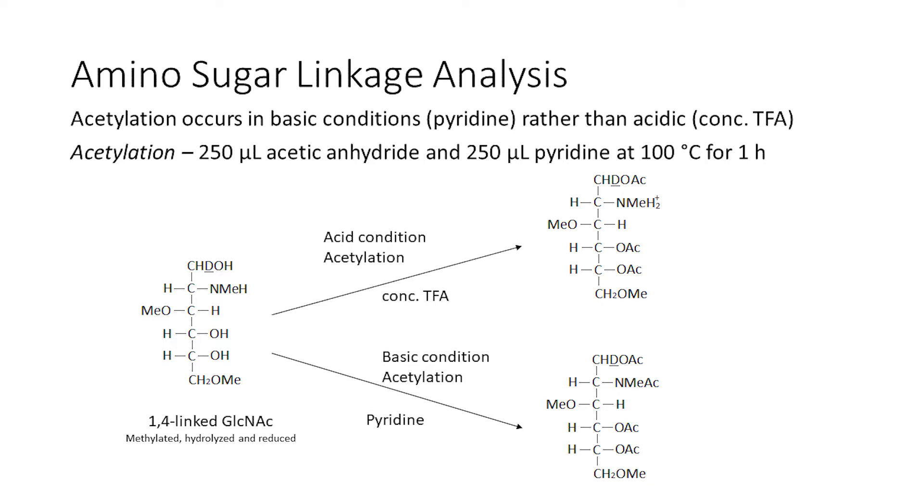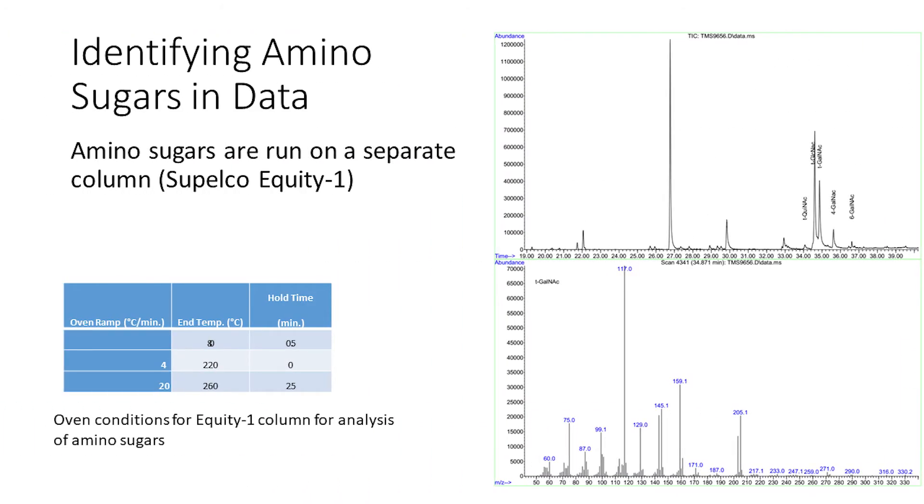For the basic condition acetylation, 250 microliters of acetic anhydride and 250 microliters of pyridine is used. The hydroxyl groups are less efficiently acetylated so the samples are heated at a higher temperature at 100 degrees Celsius and left for an hour versus a neutral sugar procedure which heats at 45 degrees Celsius for 25 minutes.